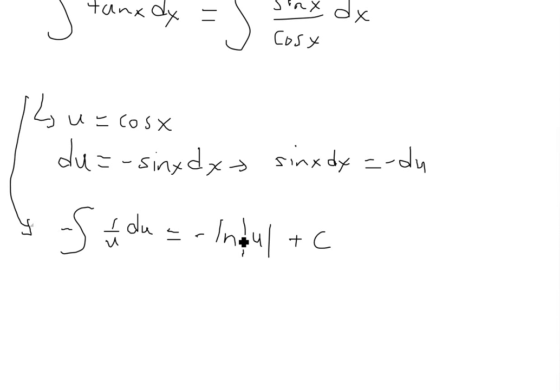So now we can even simplify this part further by using logarithmic properties and writing this as equal to ln absolute value of u to the power of negative 1 right here. So this negative in front, we just bring this and put it as a power. So plus C.